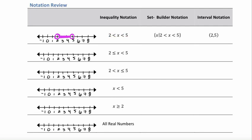In our next example, we have 2 is less than or equal to x, which is less than 5. In set builder notation, we write the set of x such that 2 is less than or equal to x, which is less than 5. In interval notation, we still have 2 comma 5 — 5 is not included so it gets a parenthesis, but since 2 is included it gets a bracket. This bracket coincides with the less than or equal to symbol. On our graph, we start at 2 with a filled-in dot corresponding to the bracket, then draw an open dot at 5 and connect the two.